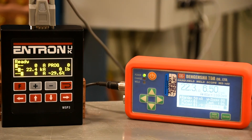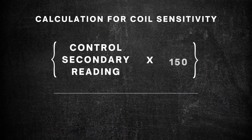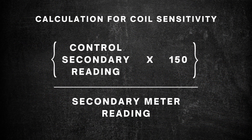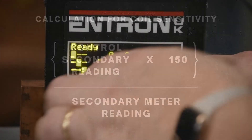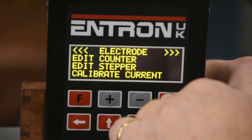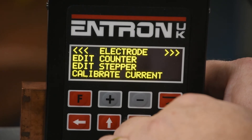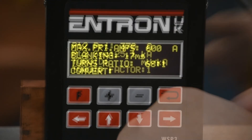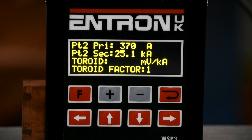Now observe the reading on the separate current meter and if the readings are not within 200 amps of one another, perform this calculation for coil sensitivity: the control secondary reading times 150 divided by the secondary meter reading. Now press the F key to the main menu, go into edit electrode and select calibrate current. Scroll to coil sensitivity and enter the calculated value.